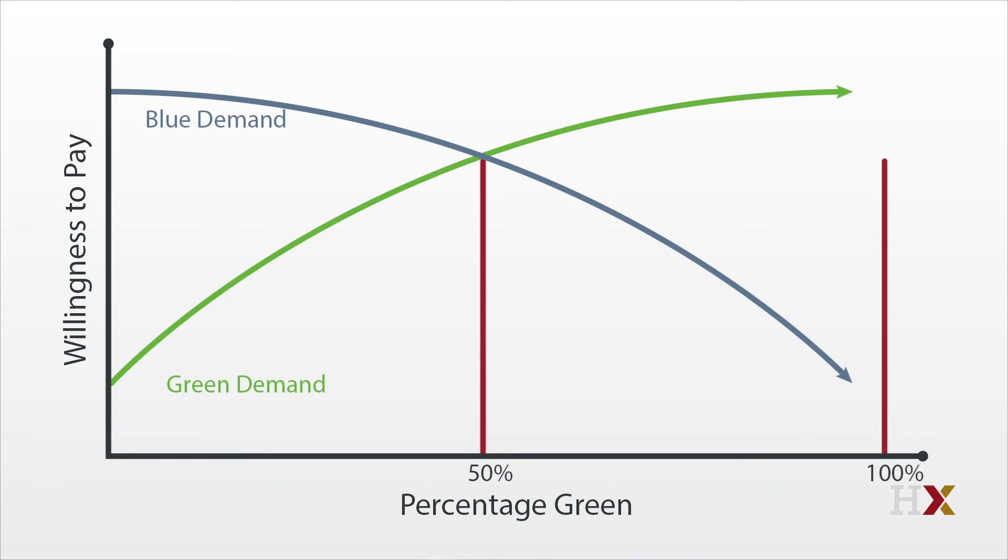Conversely, if the neighborhood shifts from 50% to 49%, the blues are suddenly willing to pay more, and this equilibrium tips to being all blue. This type of model can help explain why in the middle of the 20th century, most neighborhoods that were racially integrated were typically on their way from being all white to being all African American.